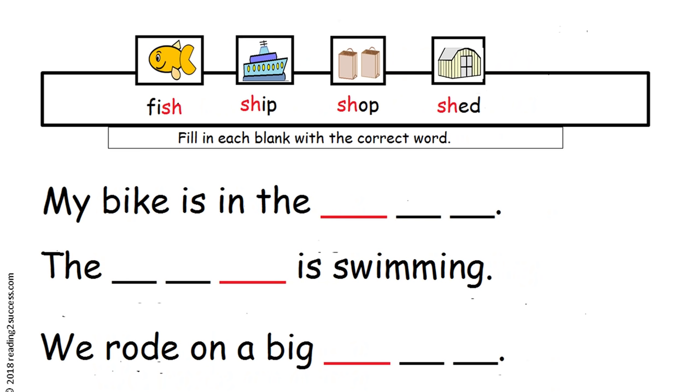Now introduce kids to the writing practice page where they fill in each blank with the correct word. There are three sentences and four words, so they have to determine which word makes the sentence and which word is not needed. For the first sentence, my bike is in the shed. That makes sense. Shop would also make sense, but it was used as a verb. So we're going to choose the word shed.